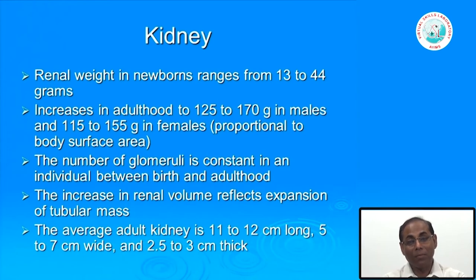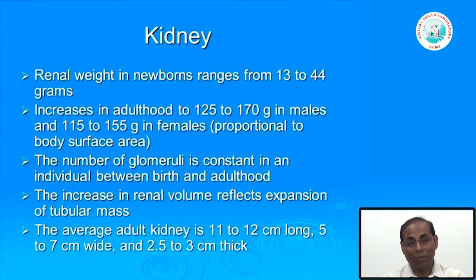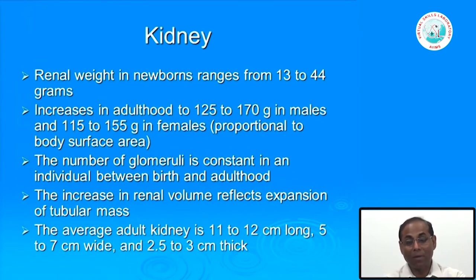The increase from 13–44 grams to almost 170 grams is due to expansion of the tubular mass. This means a huge amount of structural modification takes place in the kidney just to enable its excretory function as well as other important functions such as regulation of blood pressure, electrolyte balance, and red blood cell production. The average size of the kidney in an adult is 11 to 12 centimeters long and 5 to 7 centimeters wide, and usually 2.5 to 3 centimeters thick.